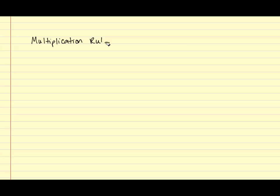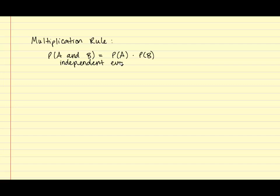The first question asks: what is the probability of selecting a king and a queen from a deck of cards with replacement? Since we're trying to find the probability of A and B, we are going to use the multiplication rule. Recall for the multiplication rule, there are two formulas. The first formula: the probability of A and B is equal to the probability of A times the probability of B. This rule is used for independent events. Recall that two events are independent if the probability of the second event is not affected by the probability of the first.